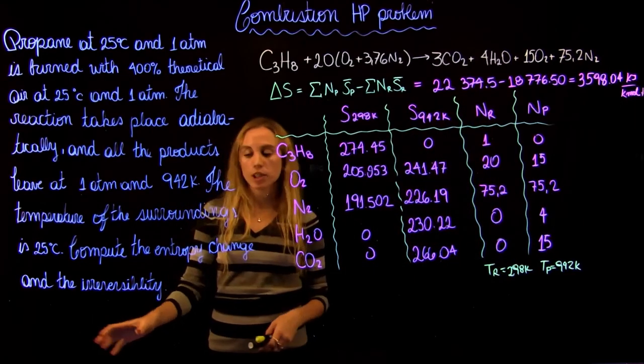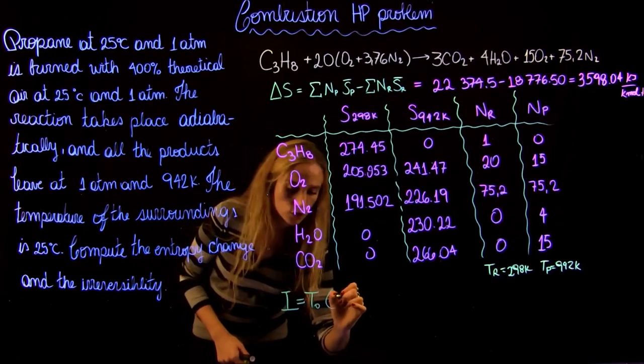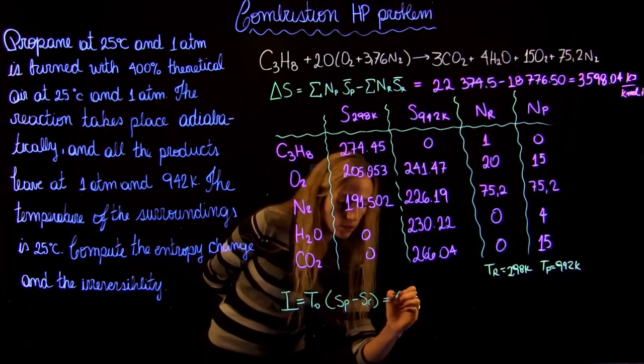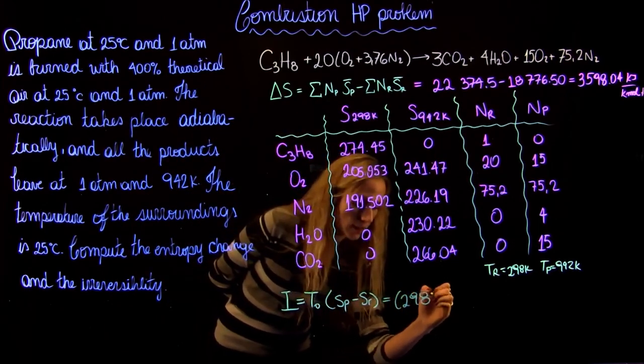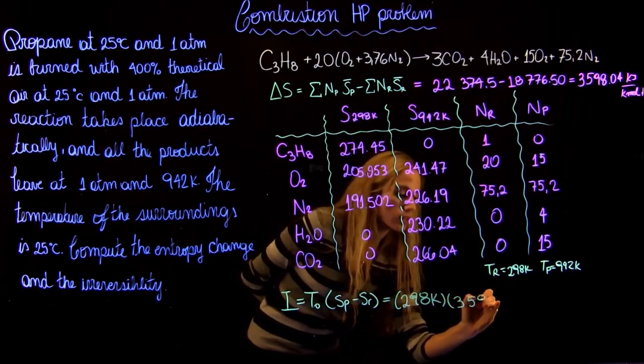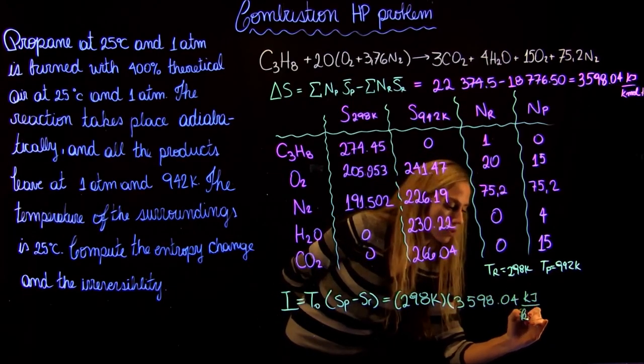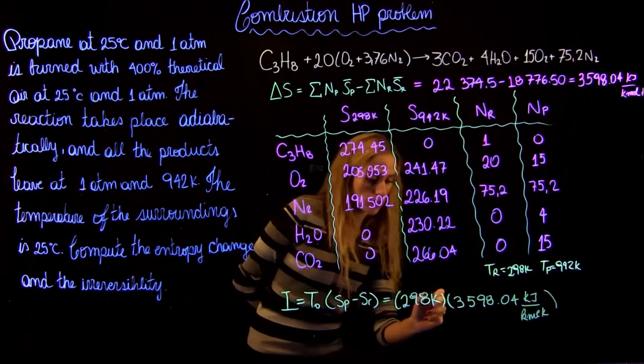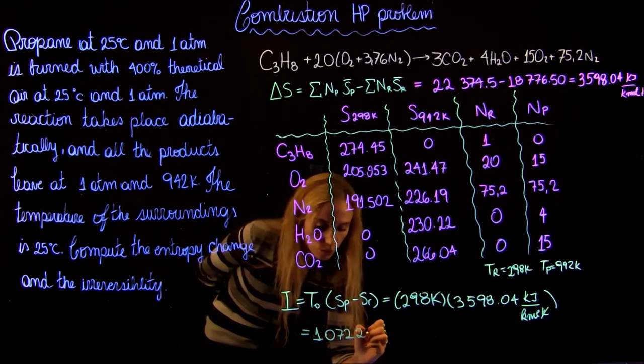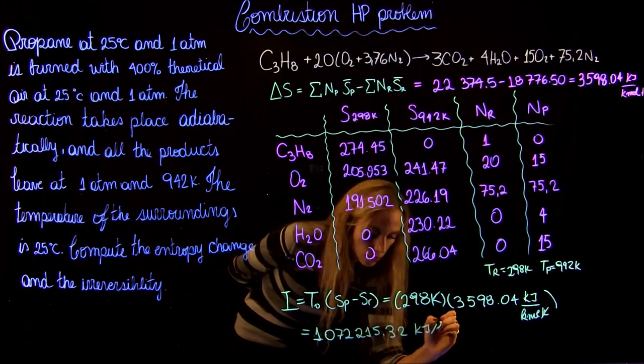Now for the second part of the question, we can say that I is going to be equal to the temperature times the change in entropy. This is the reference temperature, so that's going to be 298 kelvins times what we just found, so that's going to be 3,598.04 kilojoule per kilomole. We're going to find a value of 1,072,215.32 kilojoule per kilomole.